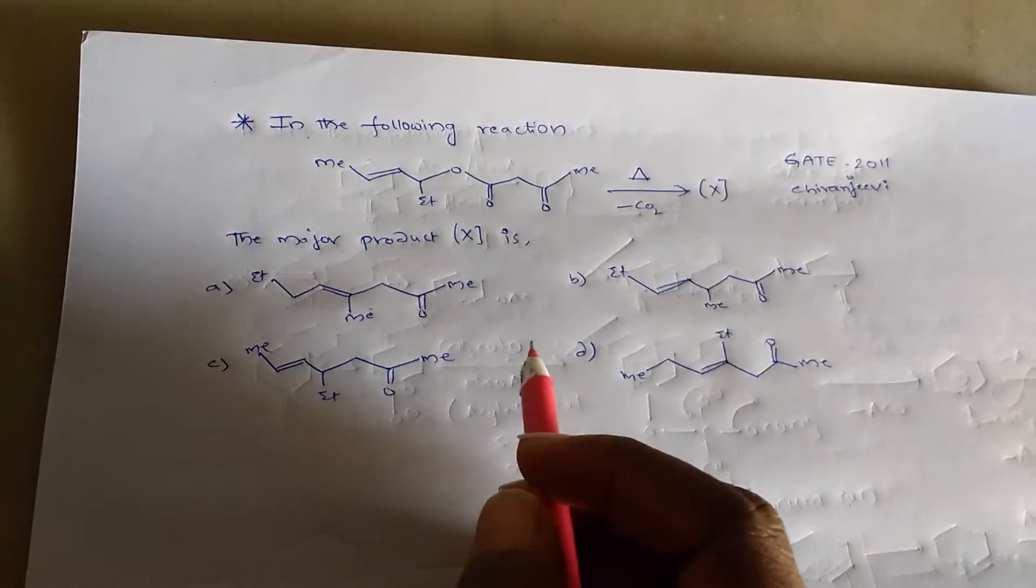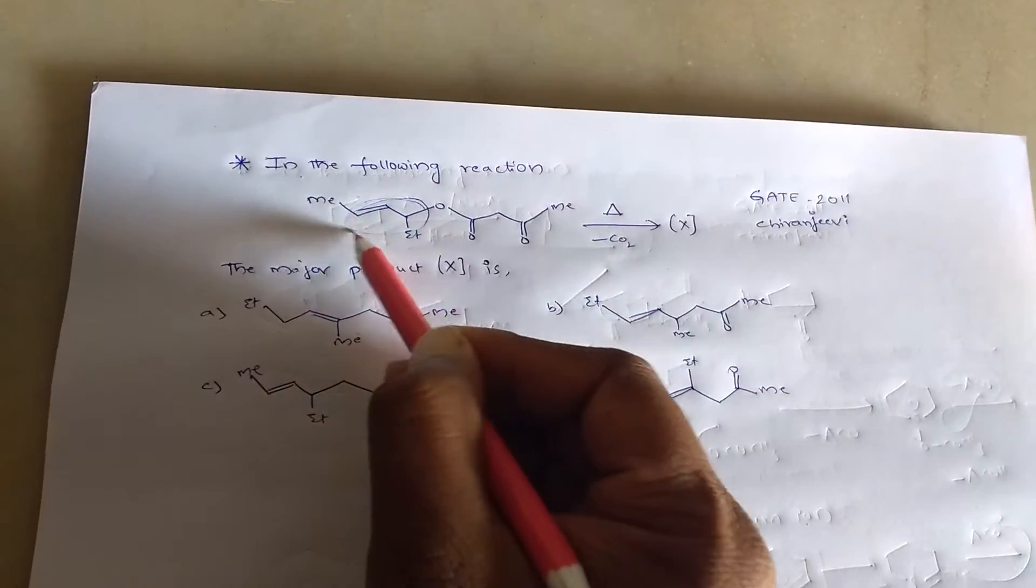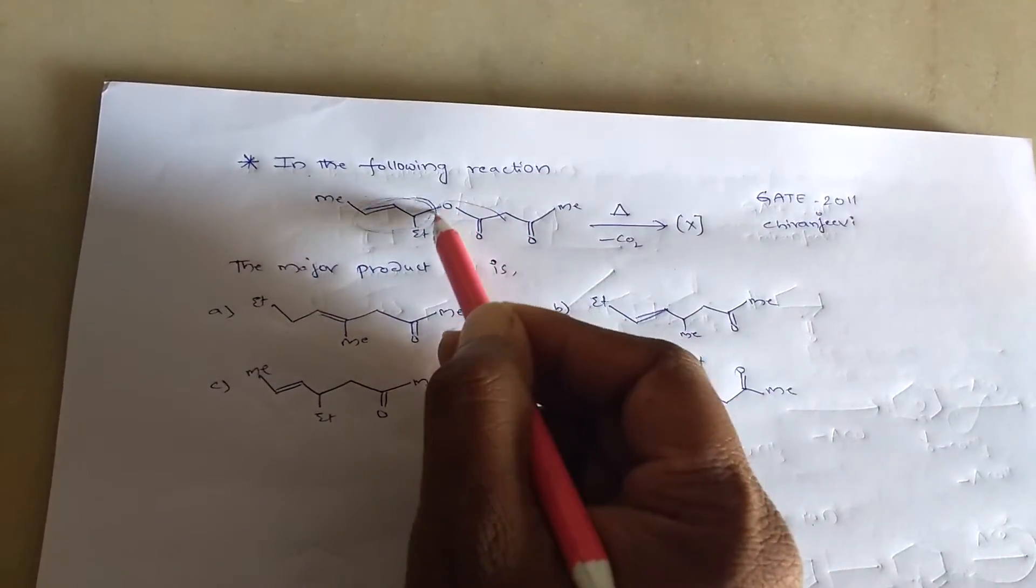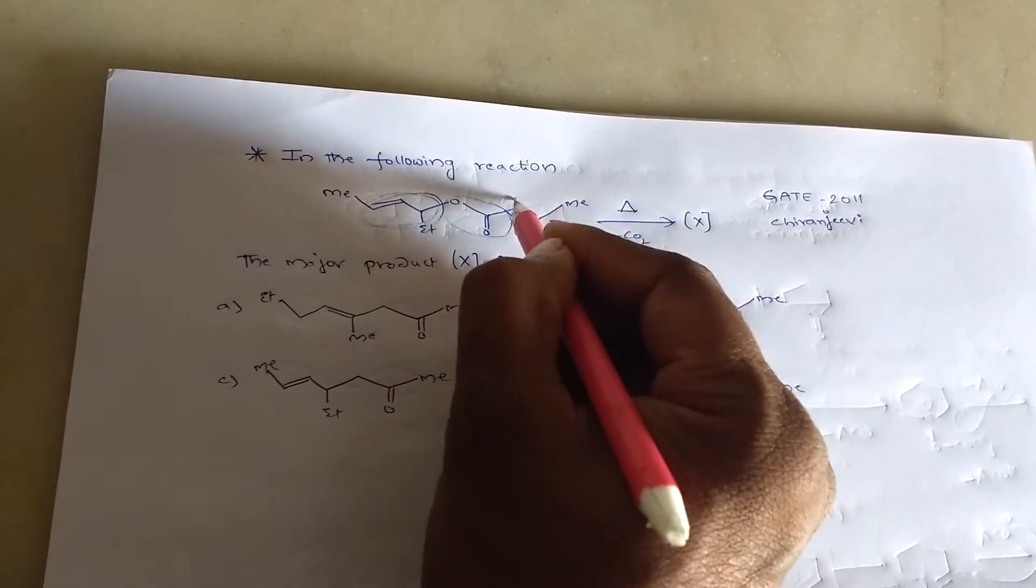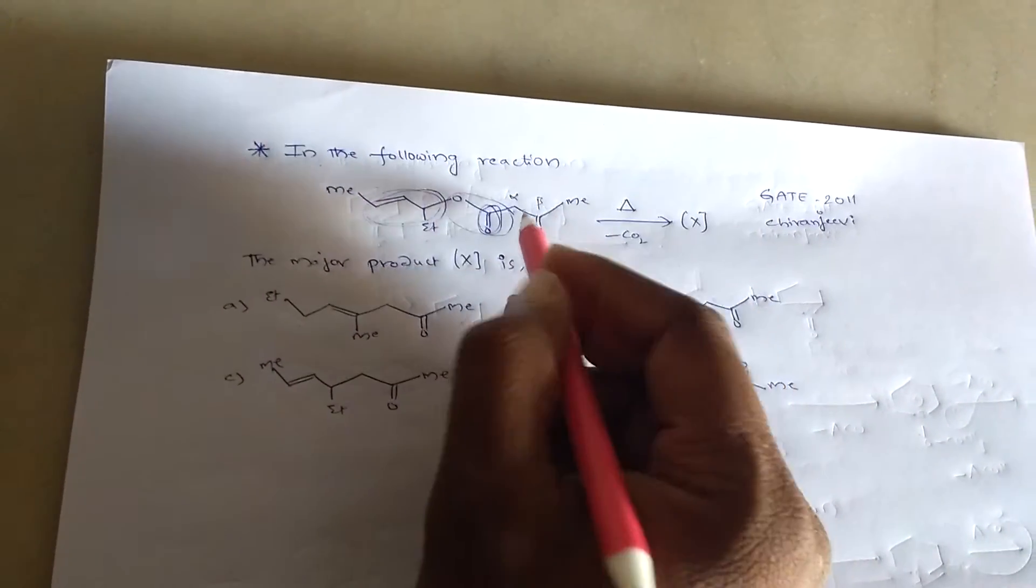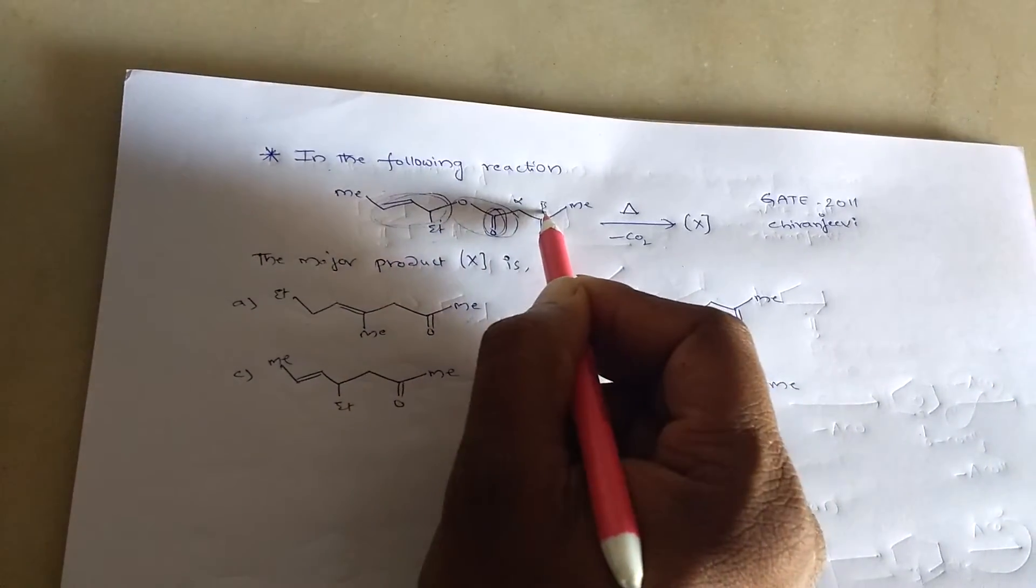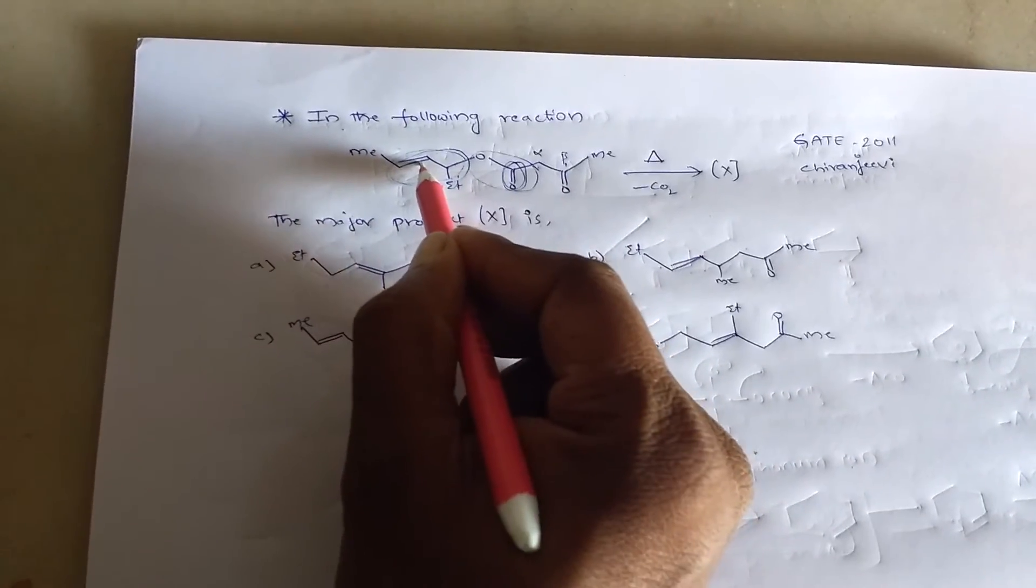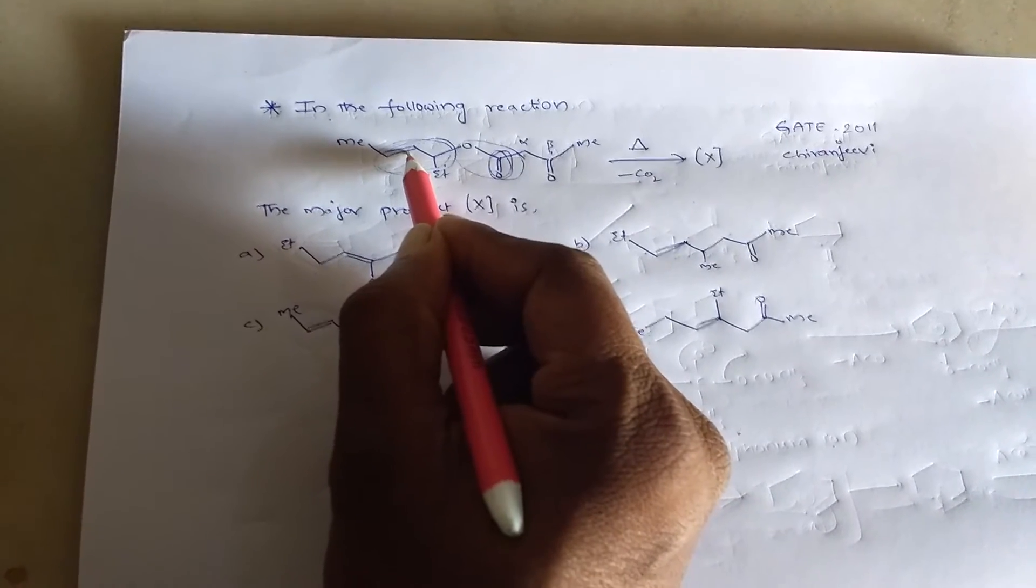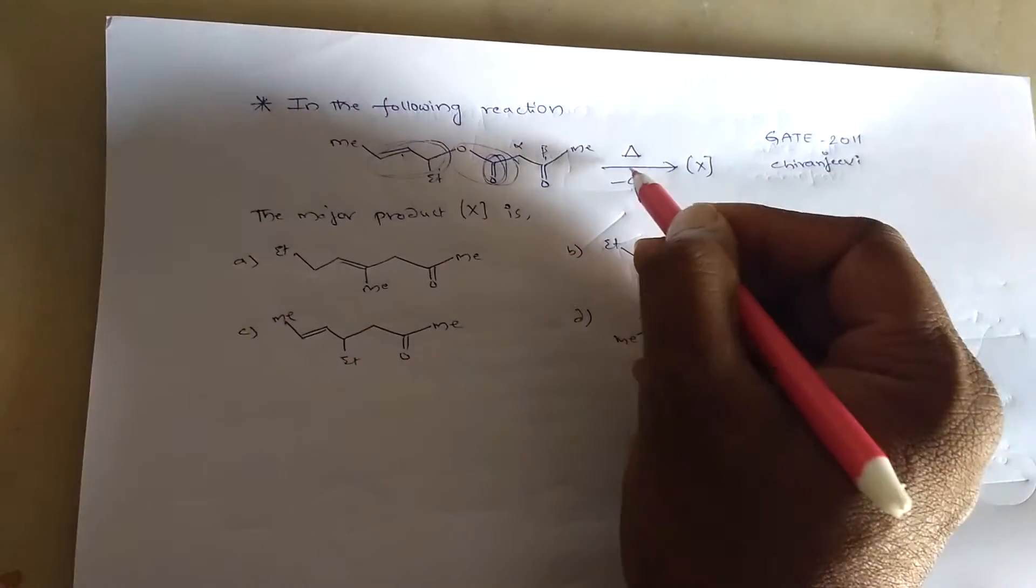Just look at the reactant. It is allylic and ester compound. This is alpha and this is beta of this carbonyl ester. And this is allylic group. Beta-keto-allylic ester. Beta-keto-allylic ester. This is beta-keto-allylic ester on heating.